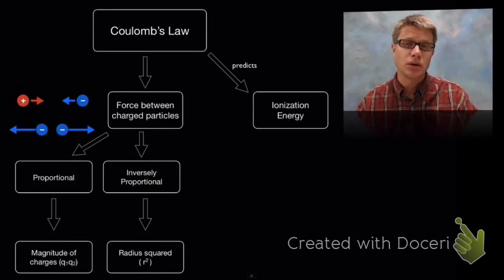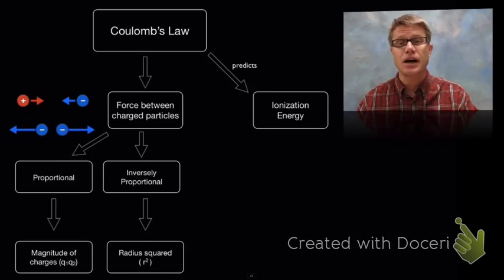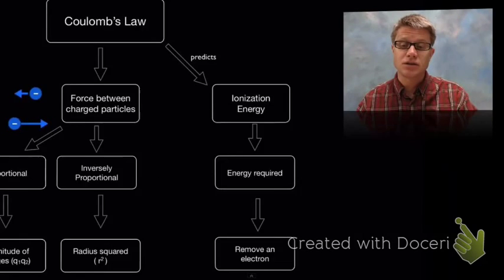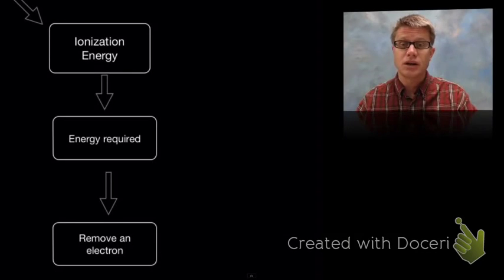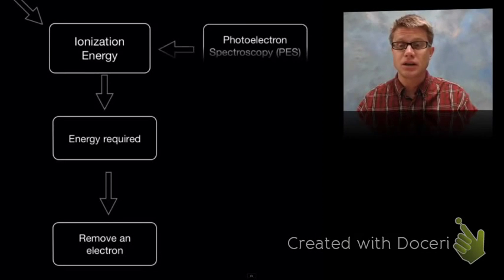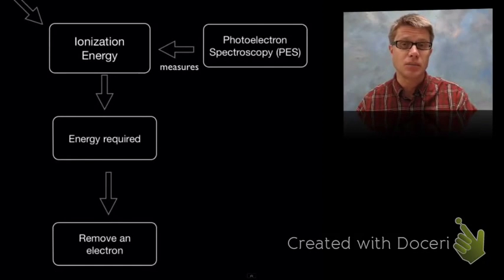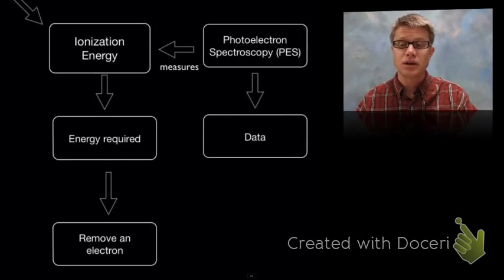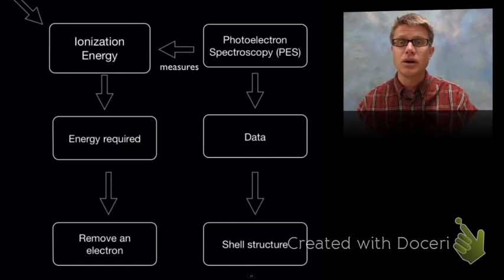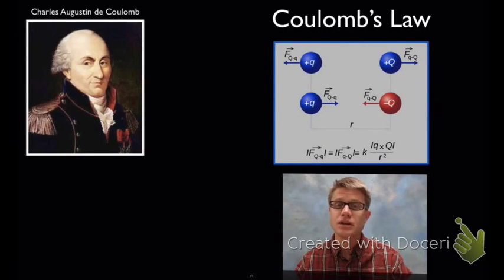This just deals on the small level with charges. In chemistry, it's important because we can use Coulomb's Law to predict ionization energy — the amount of energy required to create an ion, either losing or gaining an electron. We can actually measure ionization energy using photoelectron spectroscopy, or PES. It's a really simple concept and has huge implications for understanding what an atom actually looks like. We can use the data to predict the shell structure, which is also verified through PES.